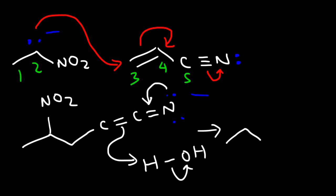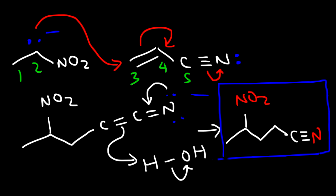The final product has a total of five carbons: carbons 3, 4, and the fifth carbon is part of the nitrile group. Attached to carbon 2 is the nitrile group. This is the major product of the Michael reaction.